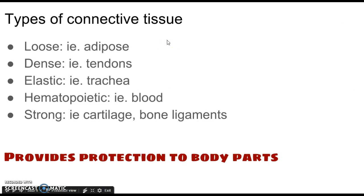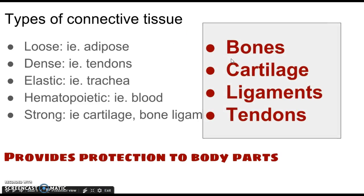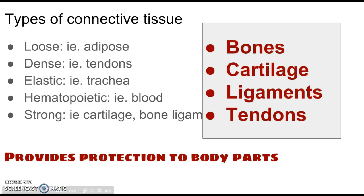Here are some categories of connective tissue: loose, dense, elastic, hematopoietic, and strong. The four we're focusing on — bones, cartilage, ligaments, and tendons — fall in the category of either strong or dense. This makes sense because the primary purpose of these types of connective tissue is to provide protection to body parts.